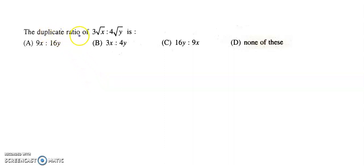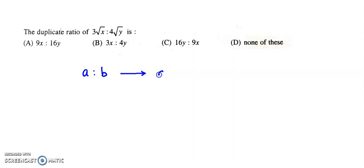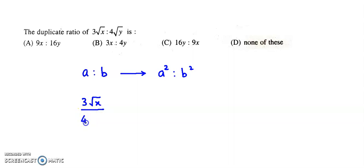The duplicate ratio of 3√x to 4√y is: if a to b is the given ratio, then its duplicate ratio is a² to b². Here the given ratio is 3√x to 4√y.